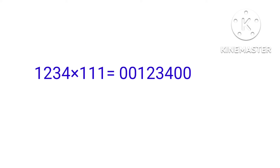Now for 1234 into 111: here 111 is a three-digit number, so the number of zeros equals 3 minus 1, which is 2. So we write two zeros on the left side and two zeros on the right side of the number.